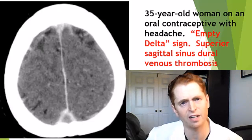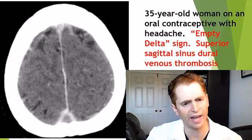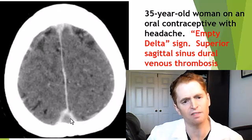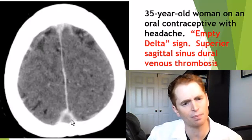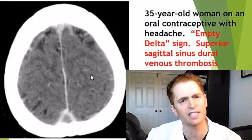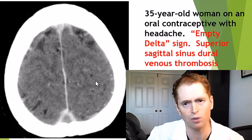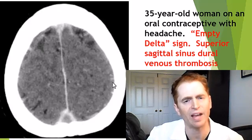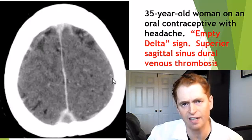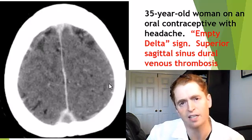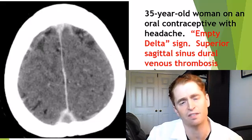This CAT scan done on a 35-year-old woman with headaches shows a gap in the posterior aspect of the superior sagittal sinus — this represents a clot, the so-called empty delta sign, consistent with dural venous thrombosis. In other words, a clot in one of the veins of the brain, a rare but known side effect of estrogen products including oral contraceptives. Progesterone-only formulations are not thought to increase the risk of this condition.